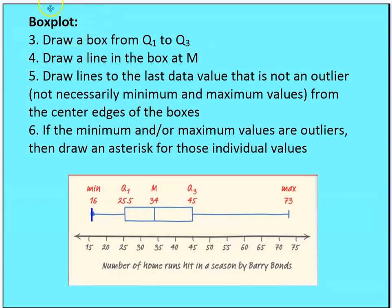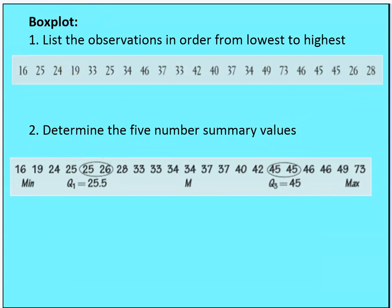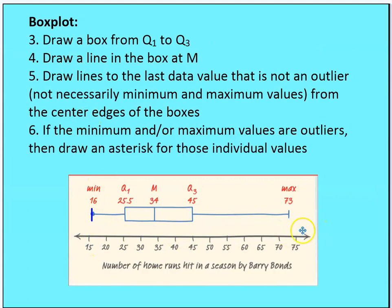To create the box plot, I have my list of data. I'm going to create a number line with at least the lowest and highest values. Then I draw a rectangular box from Q1 to Q3, draw a line in the box at the median — that's at 34 — and draw lines to the last data value that is not an outlier from the center edges of the box. If the minimum or maximum values are outliers, draw an asterisk for those individual values and do not include them in the five-number summary. You will include outliers as asterisks in your box plot, but not in your five-number summary.